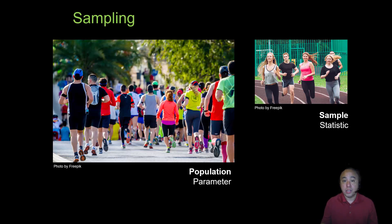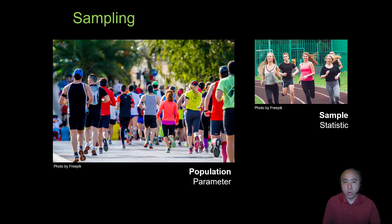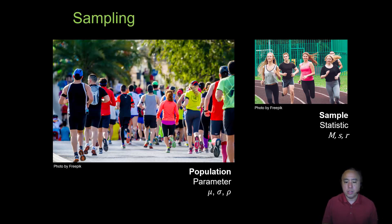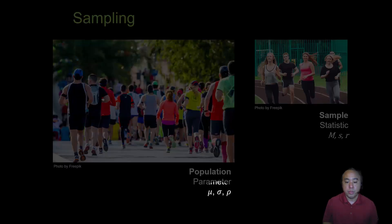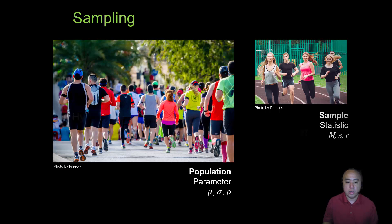Throughout this video I'll use an example of comparing running times — specifically mile times while running in a cushioning shoe versus a stability shoe, with samples of 10 per group. We draw a sample hoping that what we see in that sample reflects what the population is doing — that's why it's called inferential statistics. Different mathematical symbols denote population parameters versus sample statistics for the mean, standard deviation, and correlation.